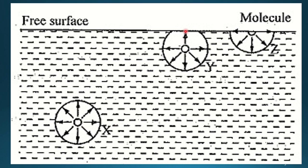For molecule Y, even though one-fourth is open to atmosphere, since the major part is inside water, the resultant force acts downward — there is more attraction in the downward direction. For molecule X, the resultant is zero because it is completely balanced. For molecule Z, half is open to atmosphere and half is inside the liquid, so it behaves like an elastic membrane under tensile force — that is exactly where surface tension comes into action.